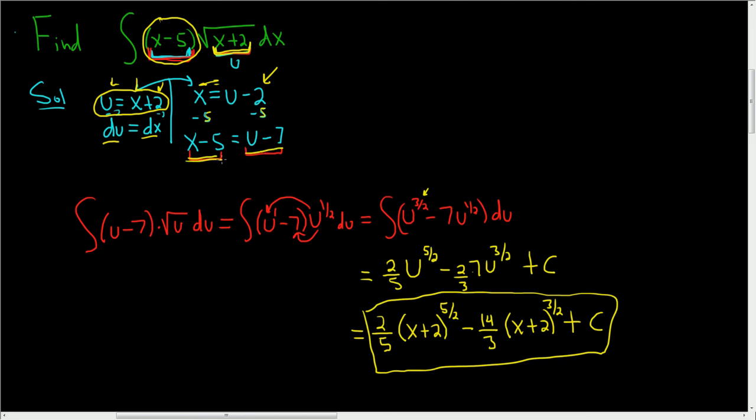So x minus 5 is u minus 7. Here it is. And it becomes u minus 7. And then this piece here, that was the u. And the rest is pretty straightforward after that. I hope this helps.